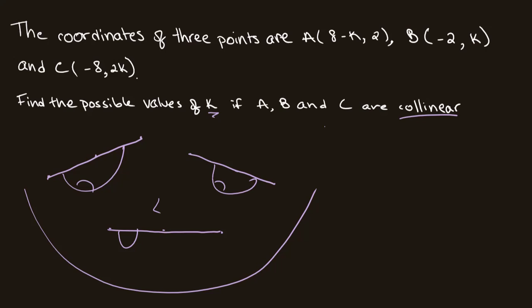Since these three points are collinear, or they land upon the same line, we know that the gradient of AB will be equal to the gradient of BC. We can tell that because they're on the same line — the gradient of one segment will be the same as the gradient of the other, as they're part of the same line.